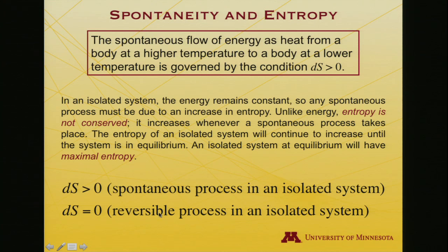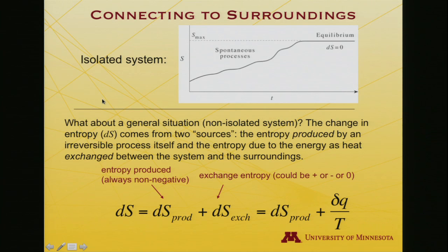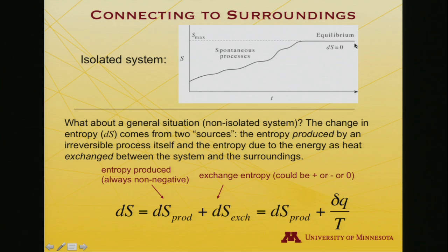So dS is greater than zero for a spontaneous process in an isolated system. At equilibrium, only reversible processes can occur, for which dS equals zero. Think of it as a plot of entropy against time: starting out of equilibrium, spontaneous processes occur, entropy increases, and finally hits a maximum value — the point at which the system is at equilibrium. At that stage the entropy does not change any longer; dS becomes zero.